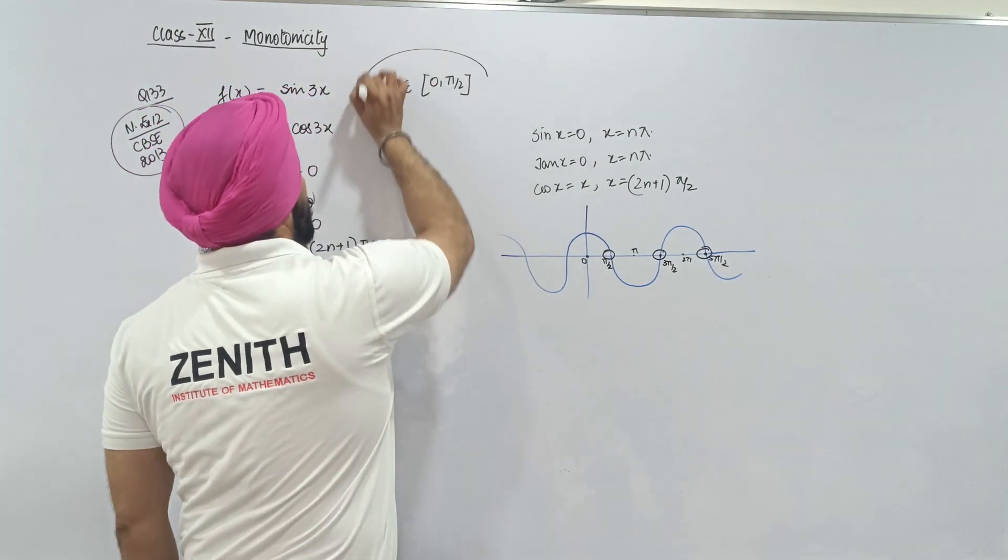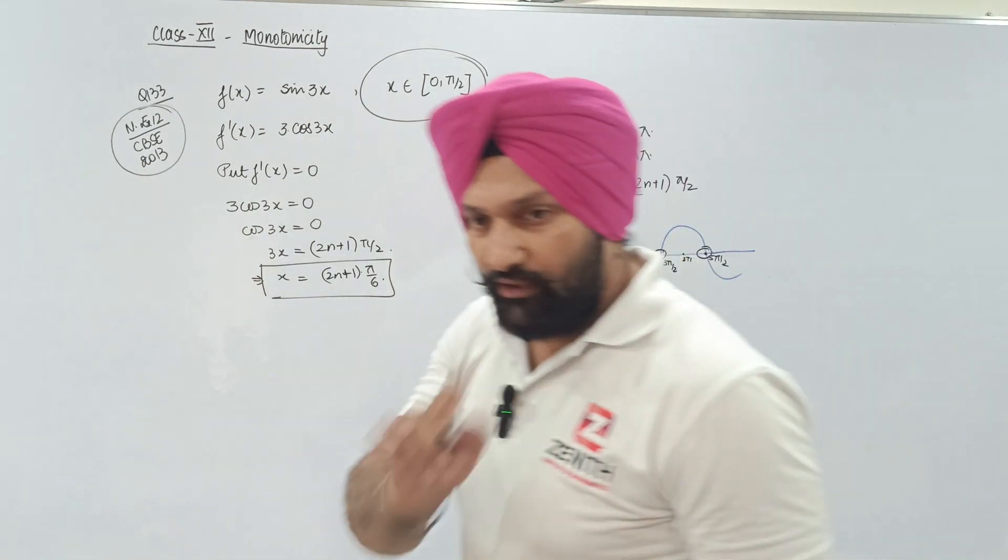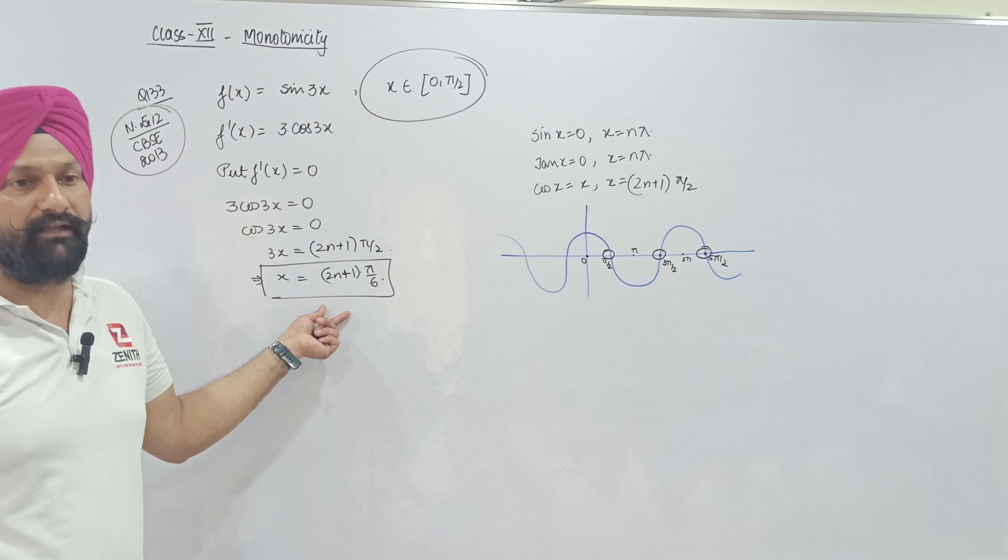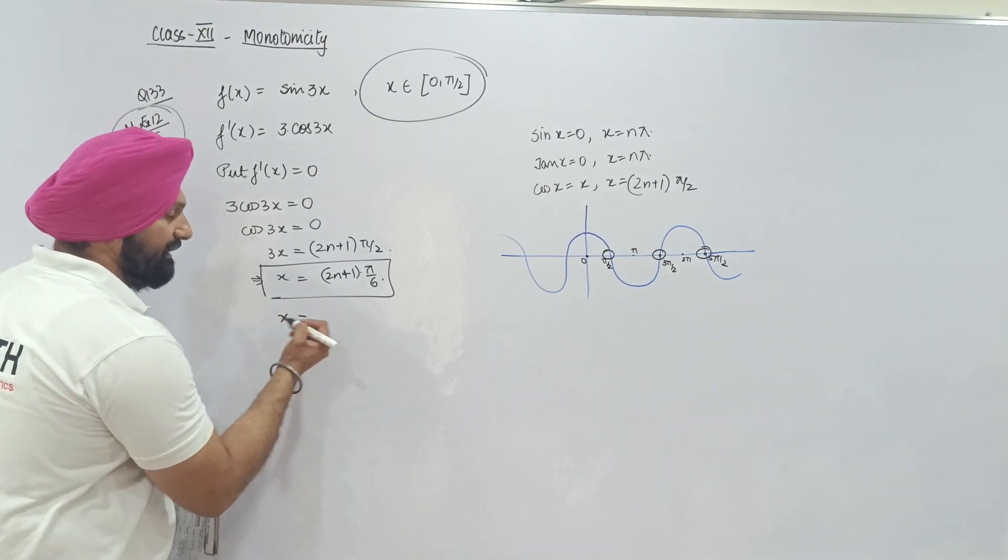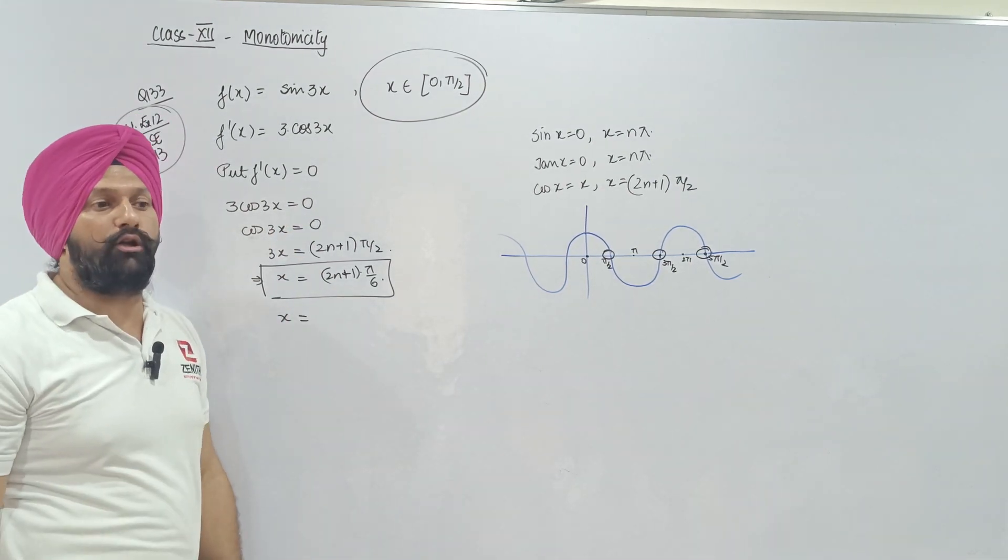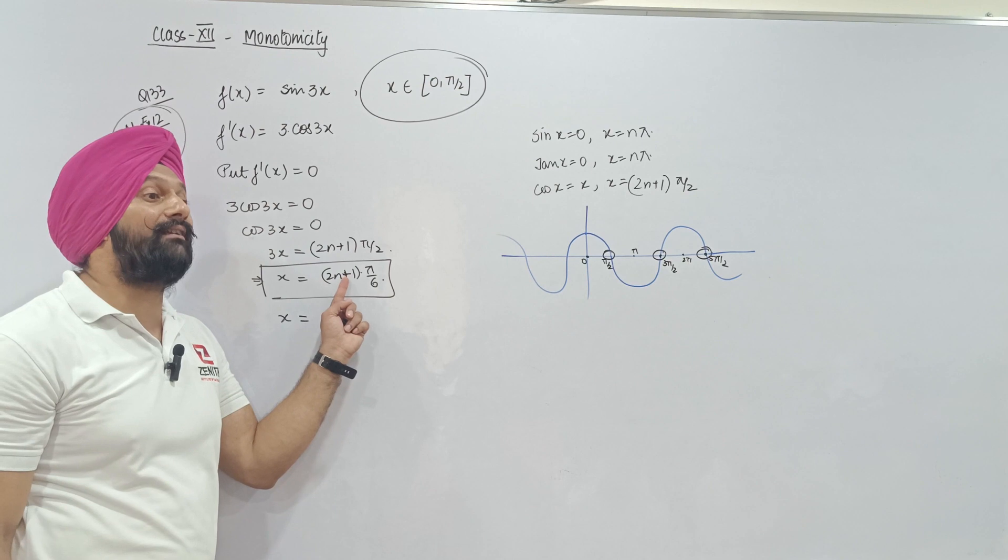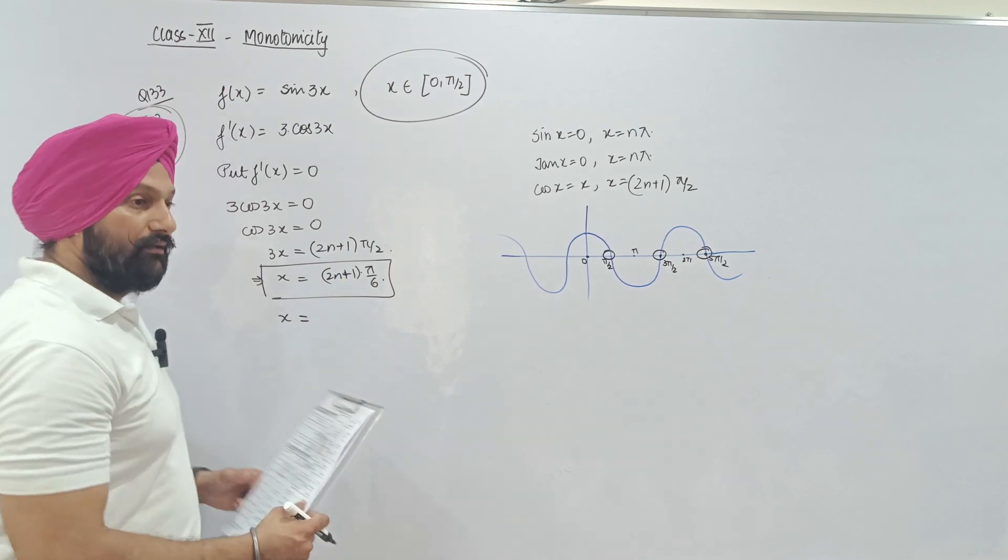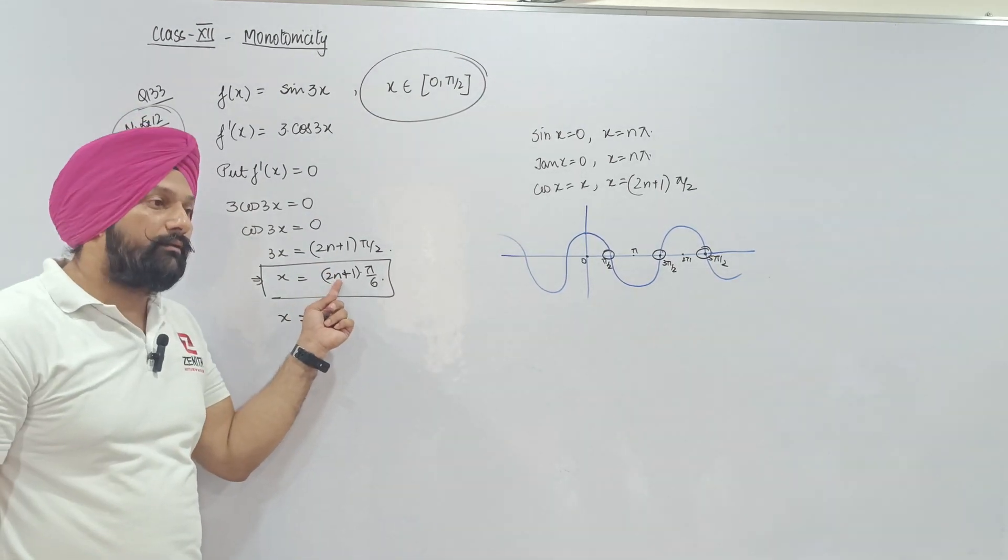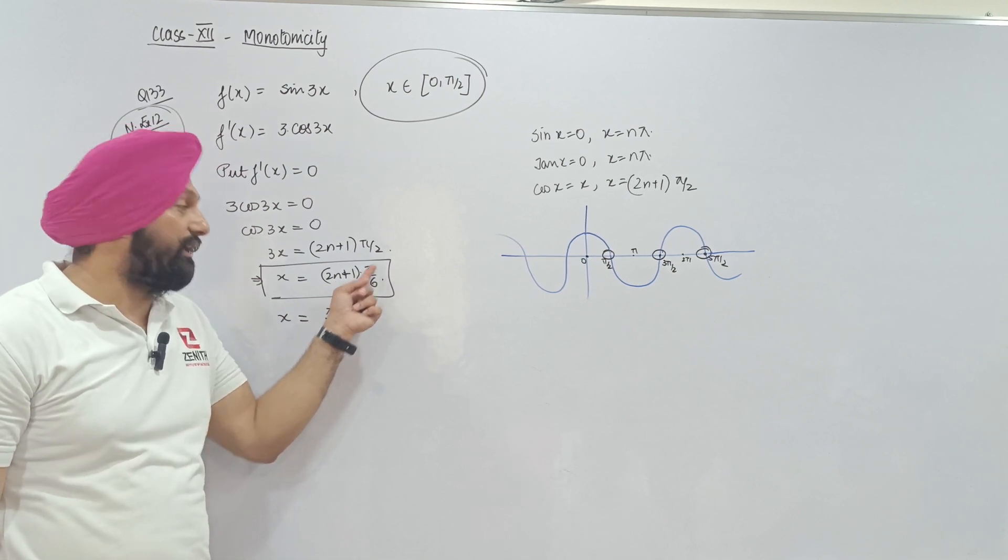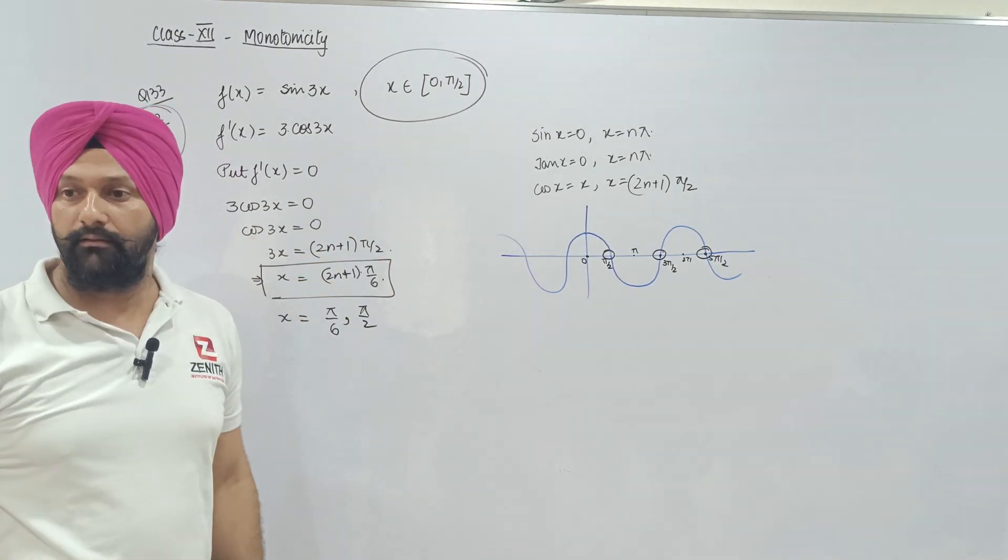I have this question domain x where 0 to π/2. I will just substitute and check that my values fall in 0 to π/2 intervals. x can be, put n=0: 2 into 0 is 0 plus 1 is 1, so π/6. And put n=1: 2 into 1 is 2 plus 1 is 3, so 3π/6 which is π/2.